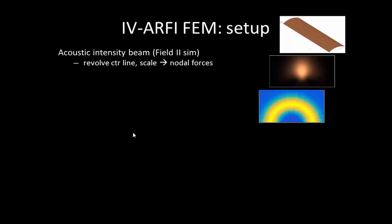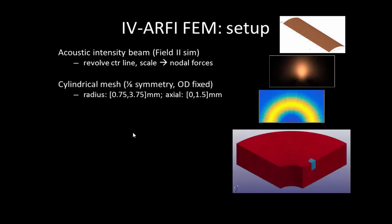We then investigated the tissue response using a finite element model. To set this up we first simulated the acoustic intensity beam profile using Field2. Field2 is limited in the angular extent of curved transducers it can simulate, so we simulated the beam from a sector and then took the center profile and revolved it about the catheter axis to get the beam shape that would be pushing radially outward in all directions, generating radial displacements. We then scaled the intensities found in this profile to nodal forces which we applied to a cylindrical mesh. The mesh was set up with one-eighth symmetry boundary conditions to reduce computational overhead.